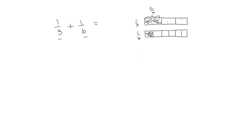So we can do 2 sixths plus 1 sixth — we now have the same units — which would be equal to 3 sixths. Since 1 third and 2 sixths are equivalent, therefore 1 third plus 1 sixth equals 3 sixths.